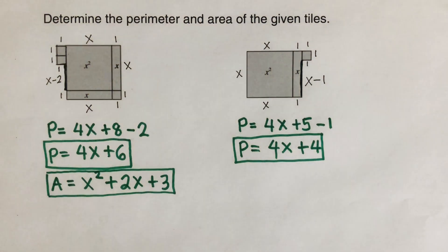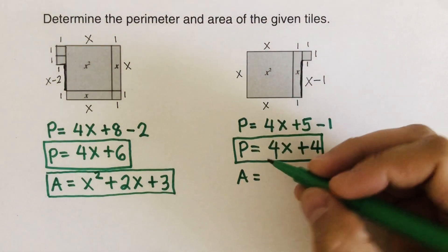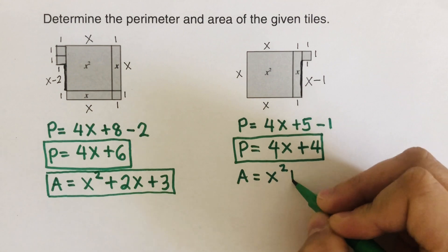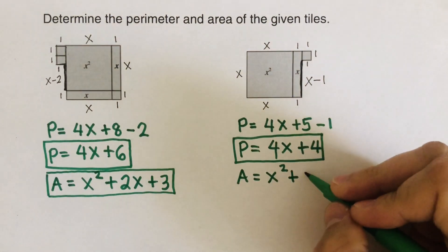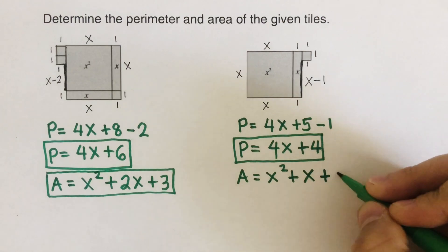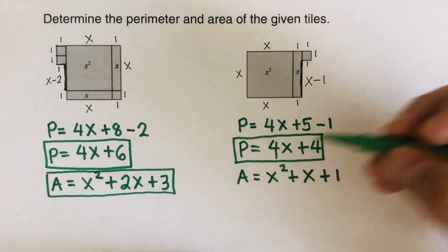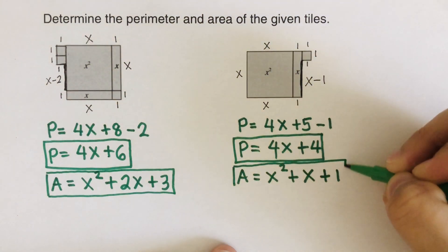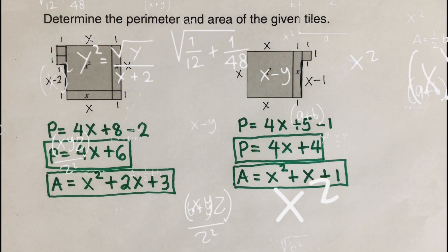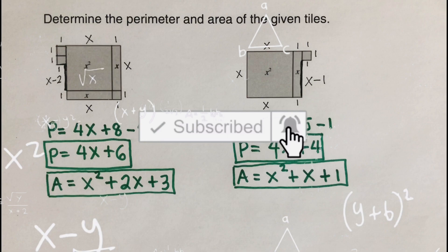Now let's find the area — just add all the tiles inside. There's one x² tile, one x tile, and one unit tile, so the area is x² + x + 1. If you find this video helpful, please like and subscribe for more math videos. See ya!